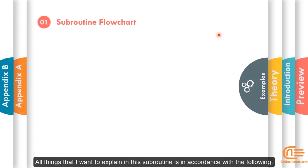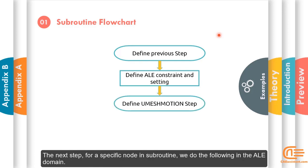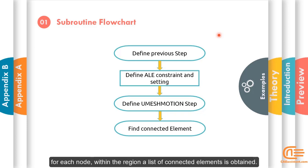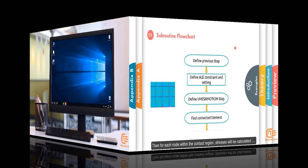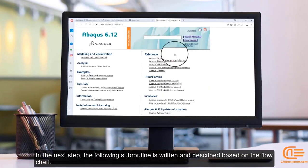All things that I want to explain in this subroutine is in accordance with the following. The first step, the specific constraint on ALE technique is defined for a number of slave and master nodes. The next step for a specific node in subroutine, we do the following in the ALE domain. For each node within the region, a list of connected elements is obtained. In the next step, the following subroutine is written and described based on the flowchart.